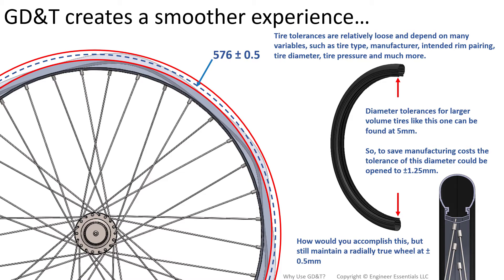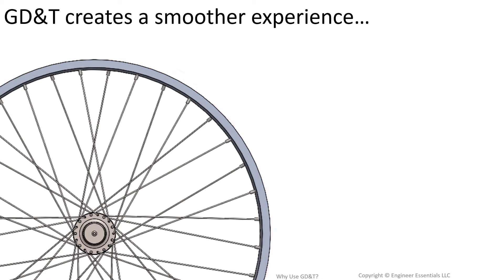So why would we hold the diameter of this rim to plus or minus half a millimeter when the tread that we put on it actually accepts a much larger deviation? To save manufacturing costs, the tolerance of this diameter on the rim could actually be opened up to something more like 1.25 millimeters. How do we accomplish this with coordinate dimensions?